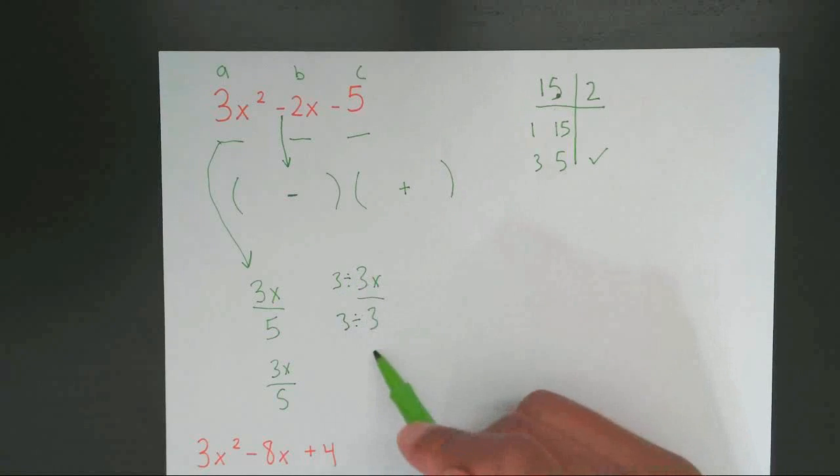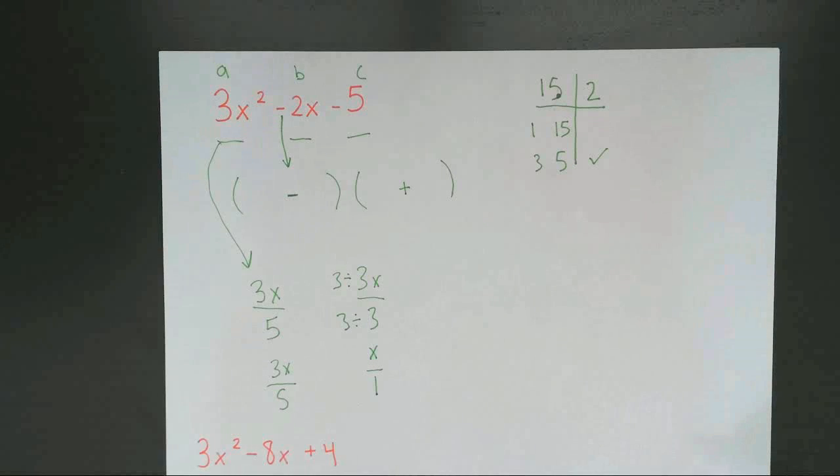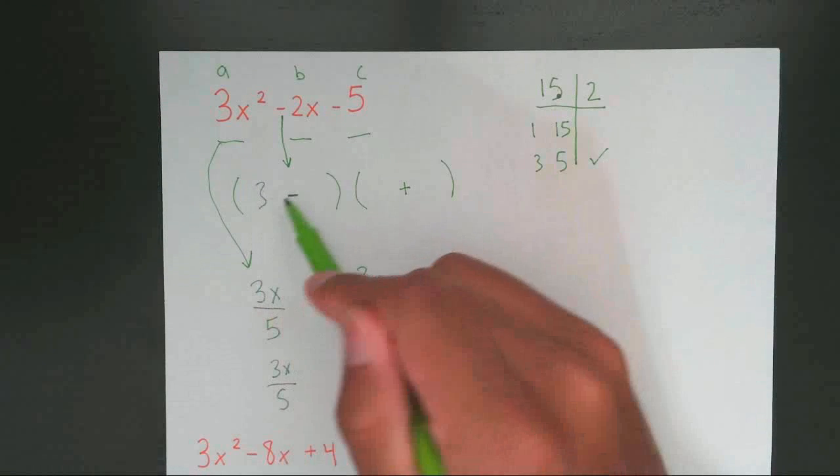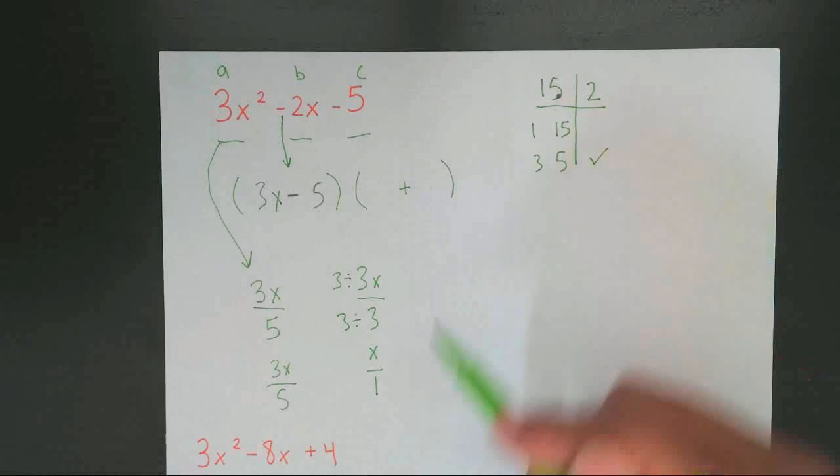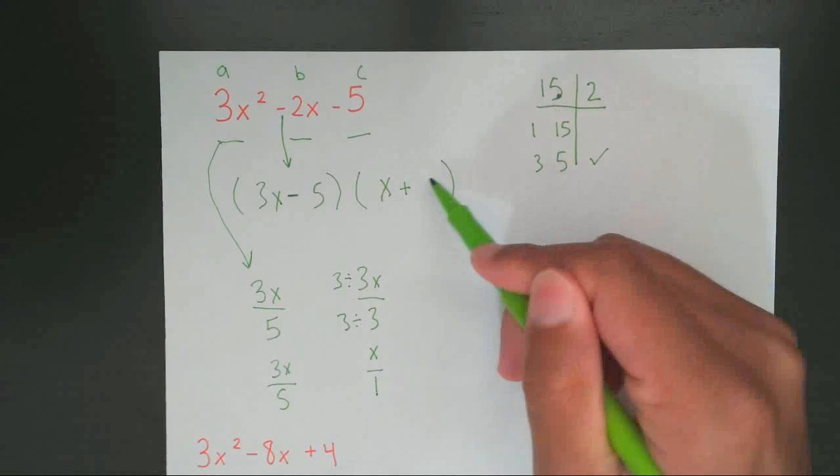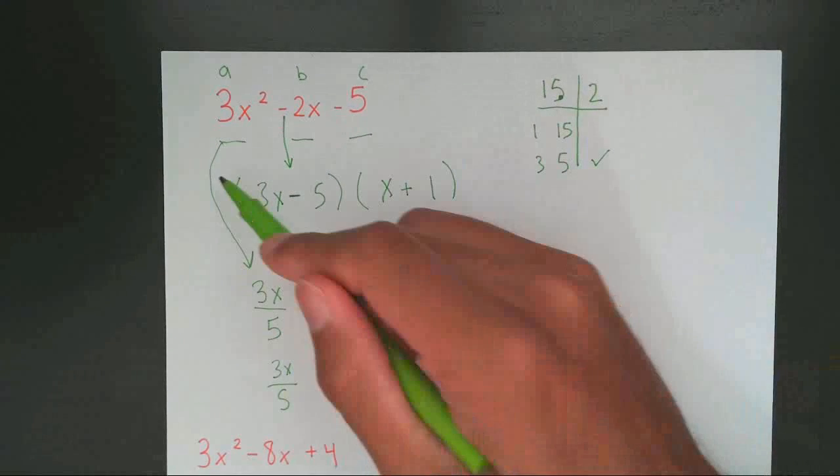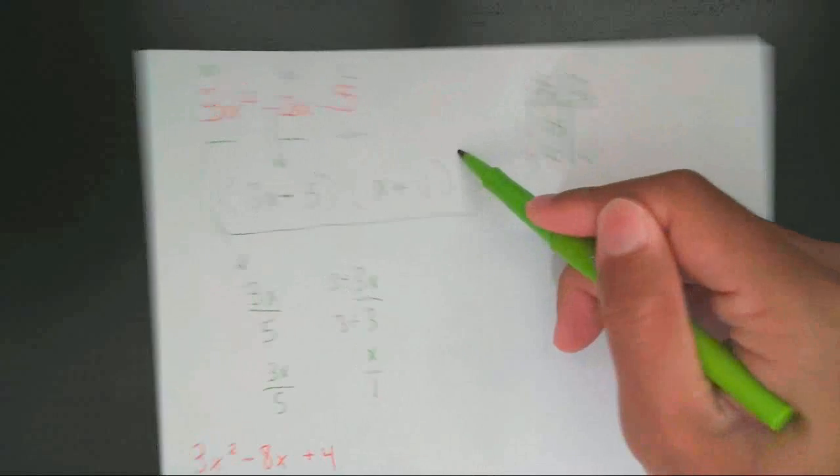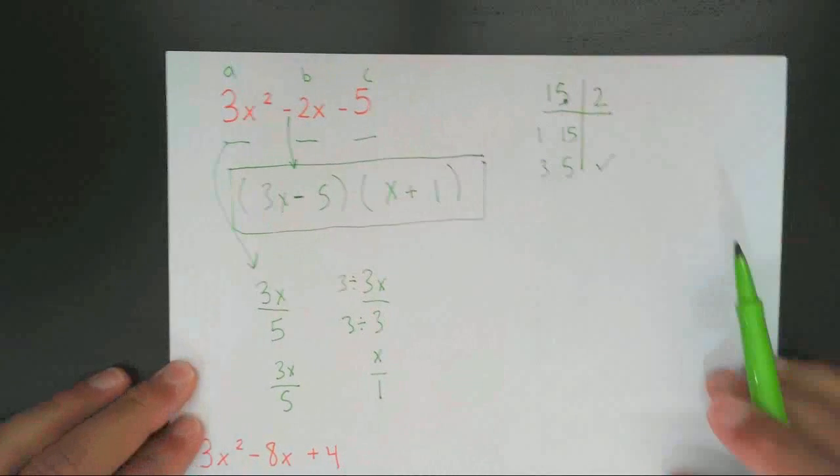And it cancels out to give us x over 1. Now I always want you to put 1 even if it cancels out. Now your next step is the easiest step. Literally put 3x5, 3x5, x1, x1. And that's how you factor anything that ever has a number that's not 1 in front of x squared.